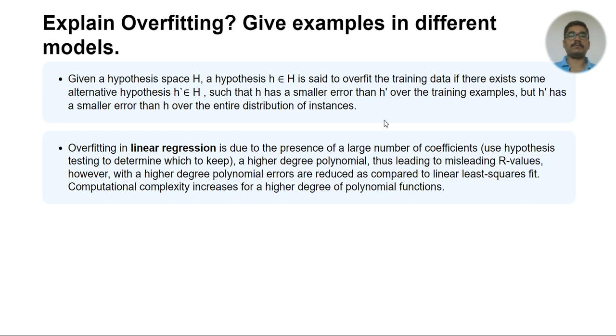You can go for higher degree polynomials, but it will lead to misleading R values. If you want to estimate the accuracy or know how good your linear regression has performed, you basically use something called R-squared, and to mitigate issues with R-squared, you use adjusted R-squared.